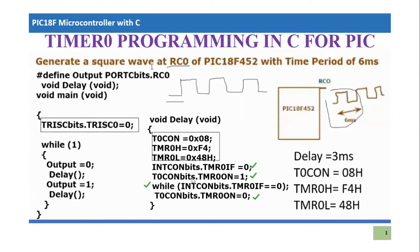This program will now produce a square wave — three milliseconds of delay while turning RC0 high, and three milliseconds of delay while turning RC0 low. I hope you have understood this tutorial. If you have any confusion, please post in the comment section. Thank you so much for listening.